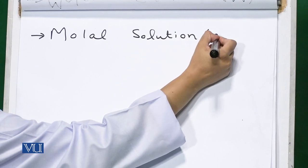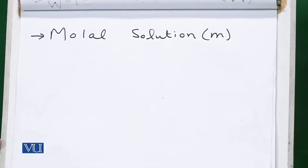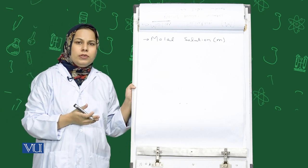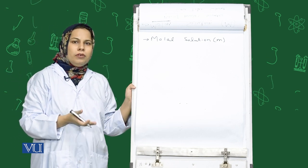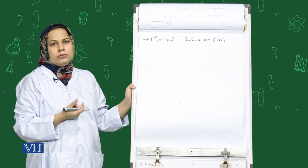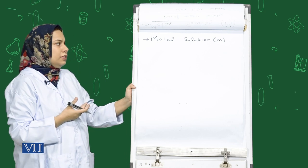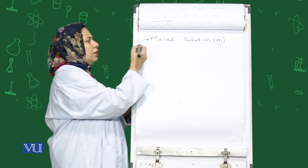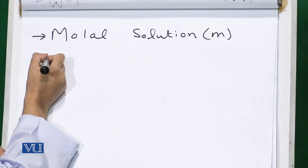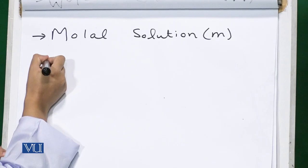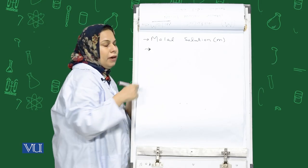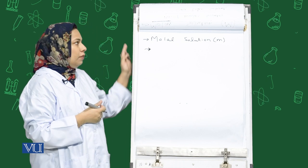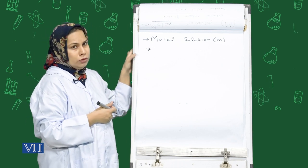Molal solution is denoted by small m, and in this we need the number of moles per kilogram of solvent — that means the solvent is measured in kilograms. Usually we will use molar solution, and the rest of the solutions we are going to prepare are molar.